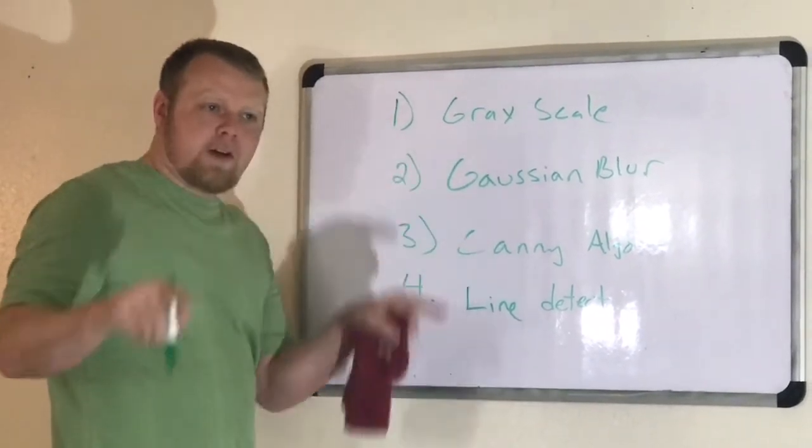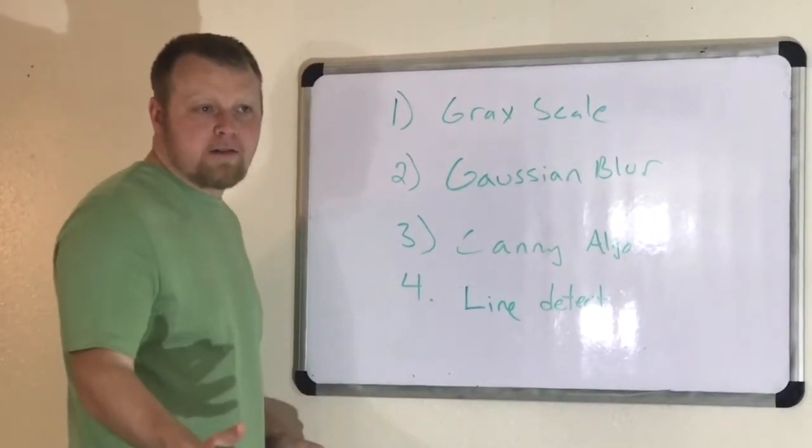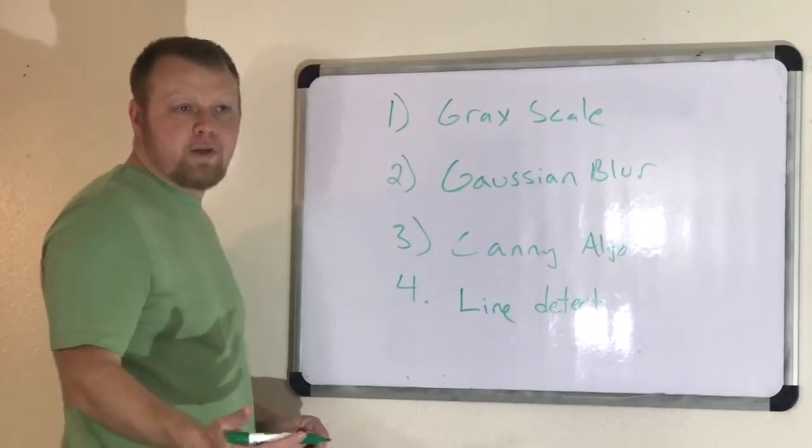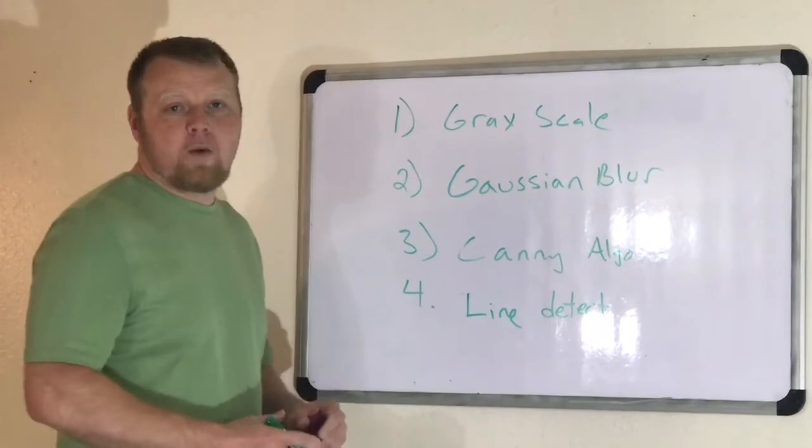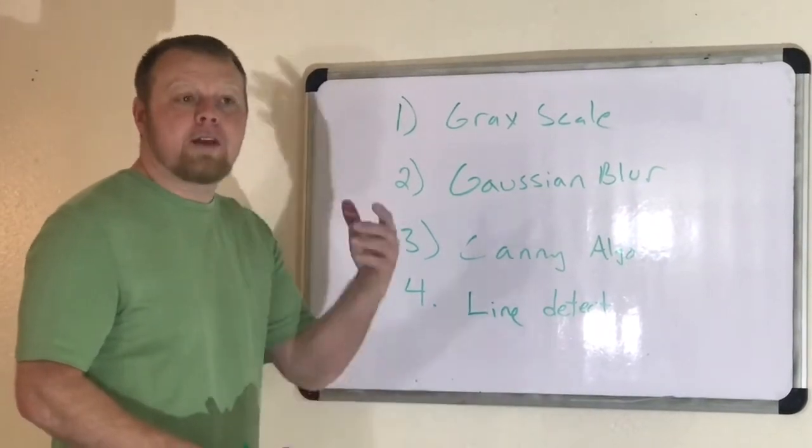The reason why you want to do that is because in a regular color image, you have all those pixels, each pixel has three colors: red, green, and blue, and each color can have a different value from 0 to 255. 255 being the white color and 0 being black and everything in between.